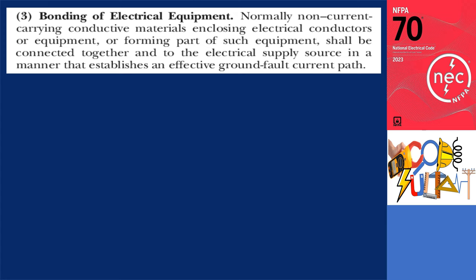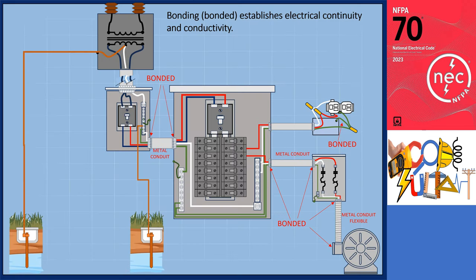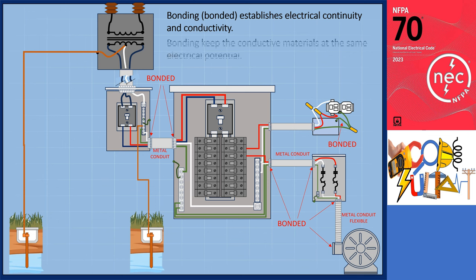Section 250.4A3 — Bonding of Electrical Equipment — states that normally non-current carrying conductive materials shall be connected to the electrical supply source in a manner that establishes an effective ground fault current path. Electrical bonding involves connecting metallic objects that may contact electrical faults or induced voltages to grounding conductors. Panelboard enclosures are bonded to metallic conduit and linked to the ground terminal, establishing an effective ground fault path, ensuring excessive current flows safely through bonding and grounding conductors. Bonding non-current carrying conductive parts together also keeps them at the same electrical potential, eliminating shock hazards between bonded enclosures.